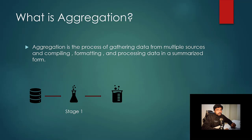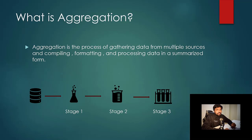Maybe as part of stage two, you want to filter some particular criteria data from that. Then maybe as part of stage three, from the output you received in stage two, you want to analyze further and get some other information from that data. So in each stage, you are deriving some data set and applying some operations using aggregation.